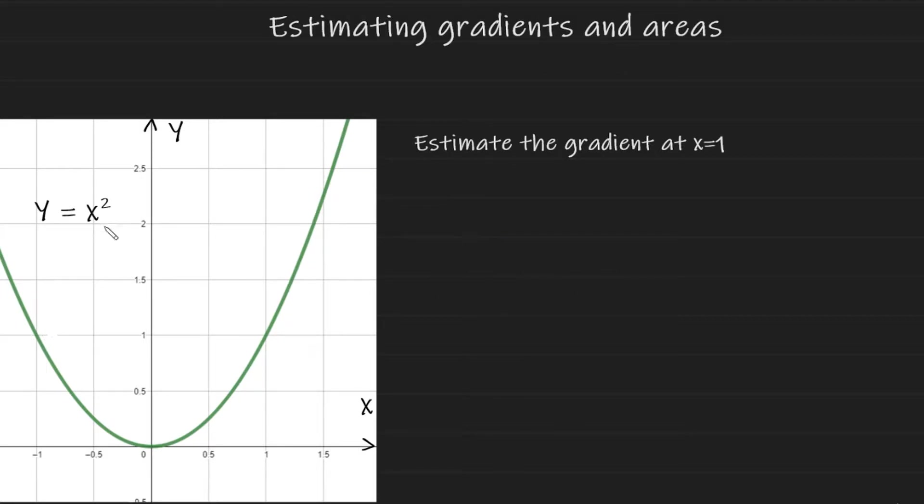So let's take a look at the first example. Here we have a graph of y equals x squared. And we're being asked to estimate the gradient at x equals one. So how should we proceed? Well, the first step is to draw a tangent at x is equal to one. So if I go to my graph, x axis at one, and then here, I should draw a tangent here.